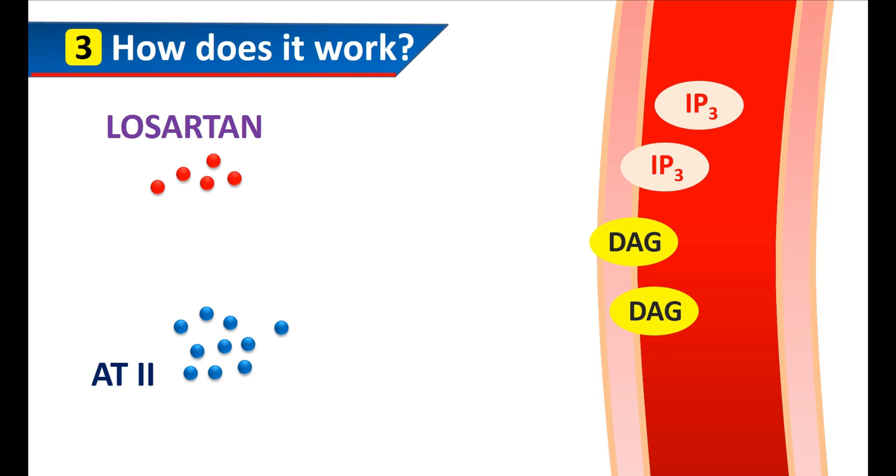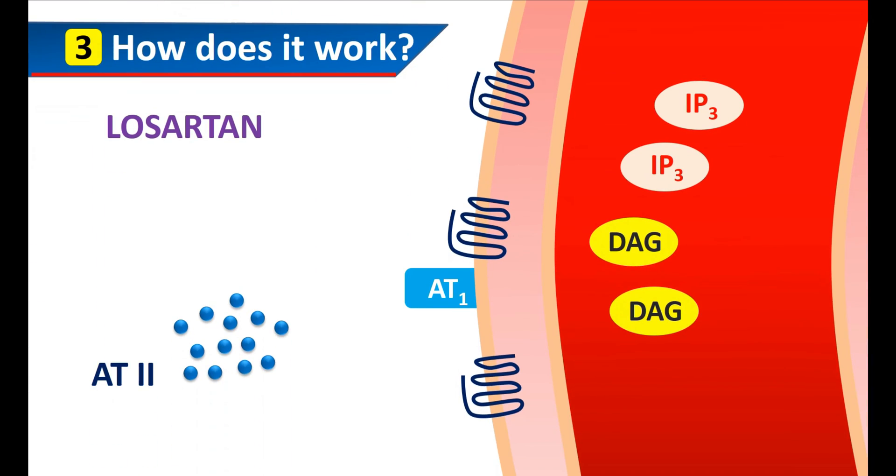In this way, blood vessels are constricted by the action of angiotensin 2. However, this action is blocked by Losartan. Losartan selectively blocks AT1 receptors. In the presence of Losartan, angiotensin 2 cannot bind and activate these receptors.